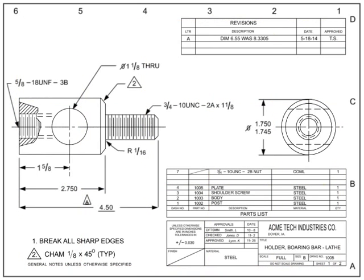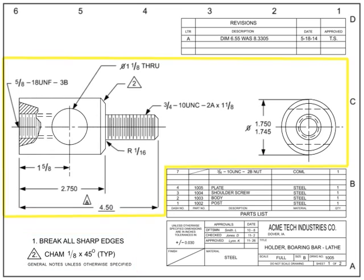Conventional parts of a drawing include the title block, the revision block, the notes list, the field of the drawing, and the list of materials or parts list.